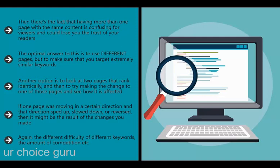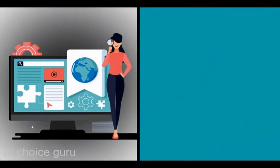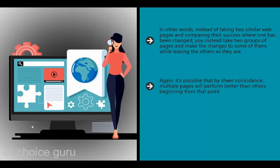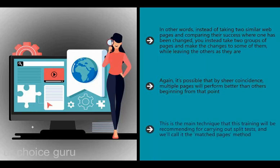Different keyword difficulty and competition can still skew your findings, but this can be mitigated by using as many pages as possible. Instead of comparing just two web pages, take two groups of pages and make changes to some while leaving the others unchanged. Use statistical significance tests to compare the ranking positions of those in group A versus group B and find out if the data suggests an effect. This is the main technique recommended in this training - we'll call it the matched pages method.